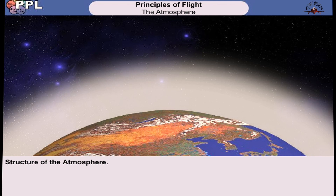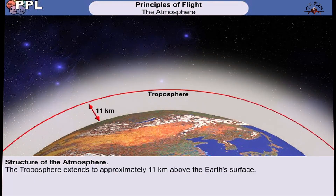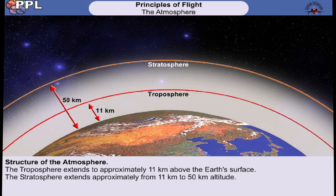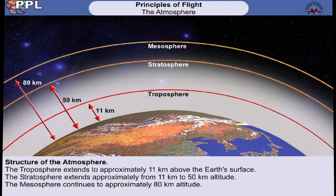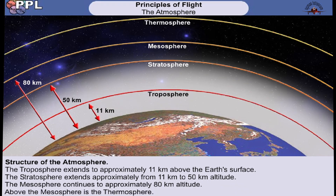The atmosphere is structured into four concentric segments or layers. Starting with the nearest to the earth, these are: the troposphere, which is approximately 11 kilometers above the earth; the stratosphere, which then extends to approximately 50 kilometers; the mesosphere, which continues up to 80 kilometers; and finally the thermosphere.